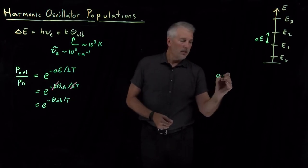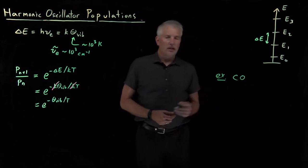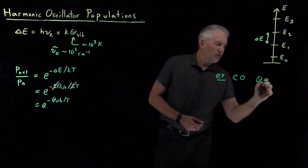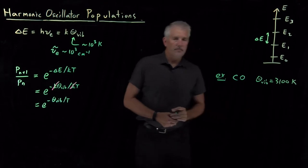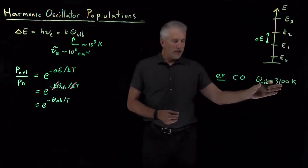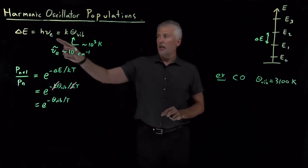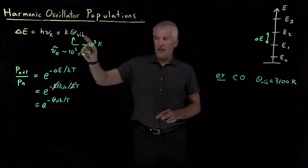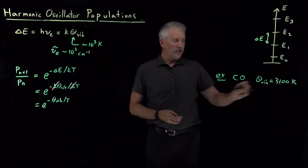For example, if we stick with our carbon monoxide molecule where we have seen that the vibrational temperature is about 3100 Kelvin. Again, that doesn't mean the molecule is hot. That means this property of the molecule H times its vibrational frequency divided by Boltzmann's constant, that constant that describes the properties of the molecule, has units of Kelvin and a value of 3100.